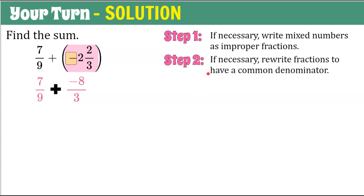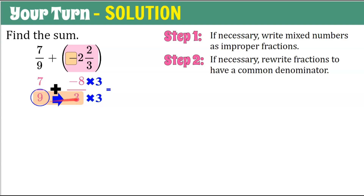Step two: rewrite fractions to have a common denominator. We have denominators of nine and three, so nine will be our common denominator — three is a factor of nine. Three times three is nine, and what I do to the denominator I must do to the numerator: negative eight times three is negative 24, over the common denominator of nine. So we have seven-ninths plus negative 24-ninths.